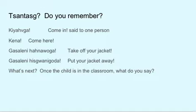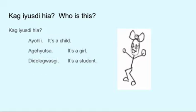What's next? You've gotten the children into the classroom, and you've gotten them to put their jackets, hats, and gloves away. What do you want them to do now? Kaguya used hiah. Who is this? Ayohli — It's a child. The ah sound indicates she is a child, or he is a child.